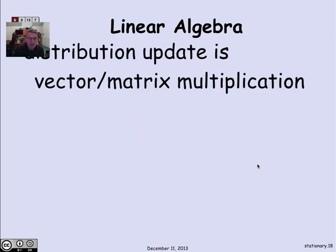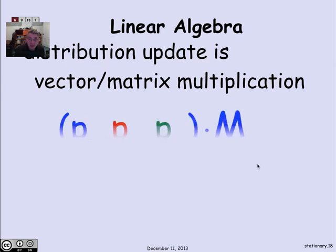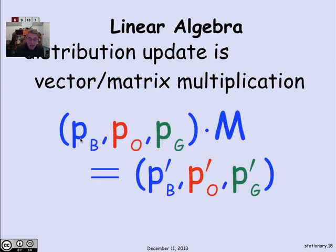Why are we bringing up the matrix? The way we updated the state to go from the one-step distribution to the two-step distribution was really a matrix multiply. In general, to do an update, you're just going to do a vector-matrix multiplication. If you have the probabilities of being in the successive states B, O, and G, and you do a vector-matrix multiplication using the probability matrix of the graph, you get the updated vector of distributions.